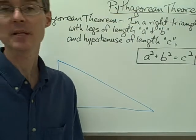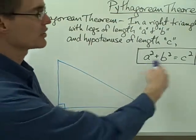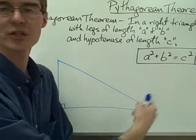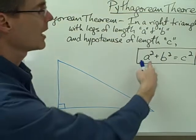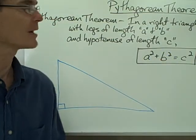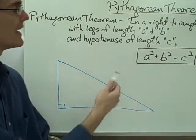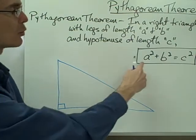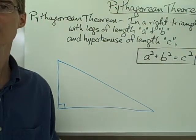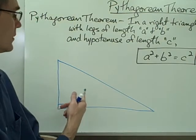For a lot of people, when they think Pythagorean Theorem, they just think of this equation, this formula. But before we get to using this formula, it's important to note what the values A, B, and C actually refer to on the triangle.